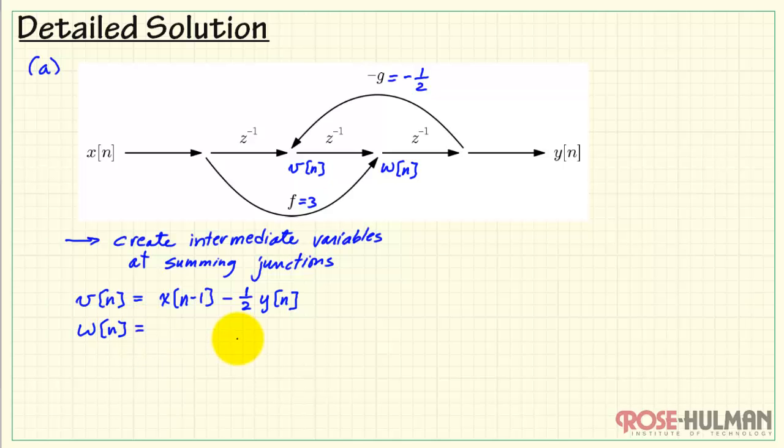Moving on to the next one. W of n equals the sum of, here we see x of n and a version of v of n entering. V of n passes through a single delay. I'll write that as v of n minus 1. x of n passes through the scale factor of 3, and that would be 3x of n. Now, finally, y of n is the single delayed version of w of n.